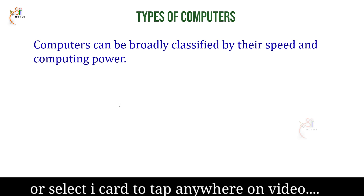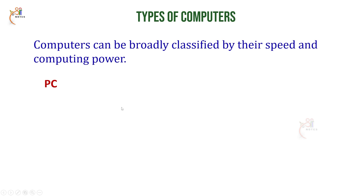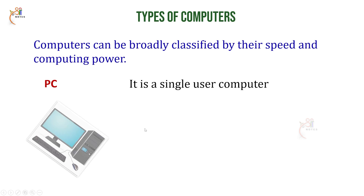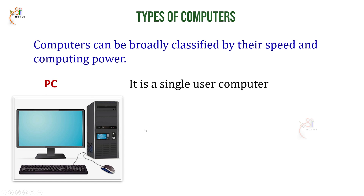The first type is the PC. PC is a personal computer and it is a single user system. For example, this is the image for that.